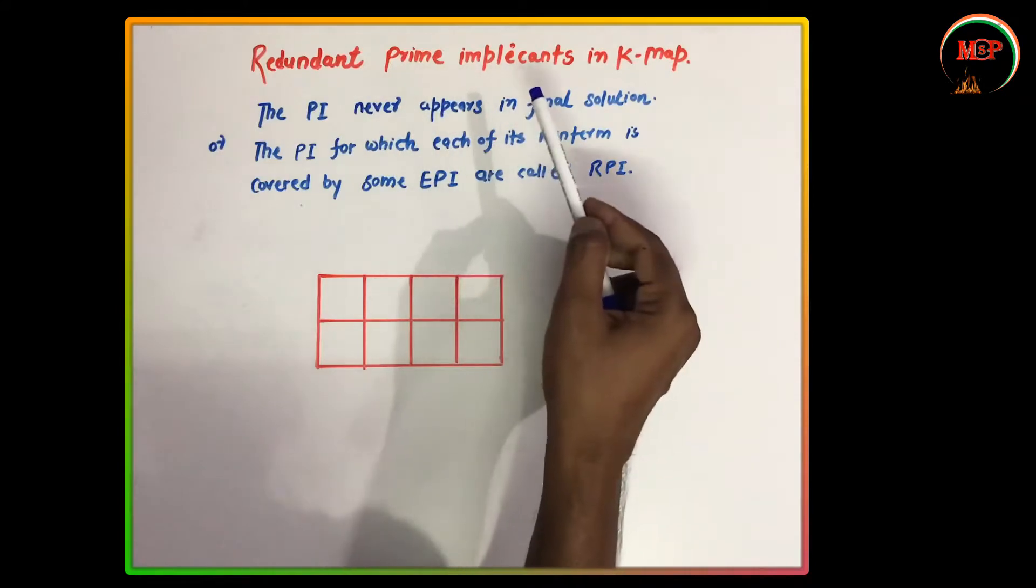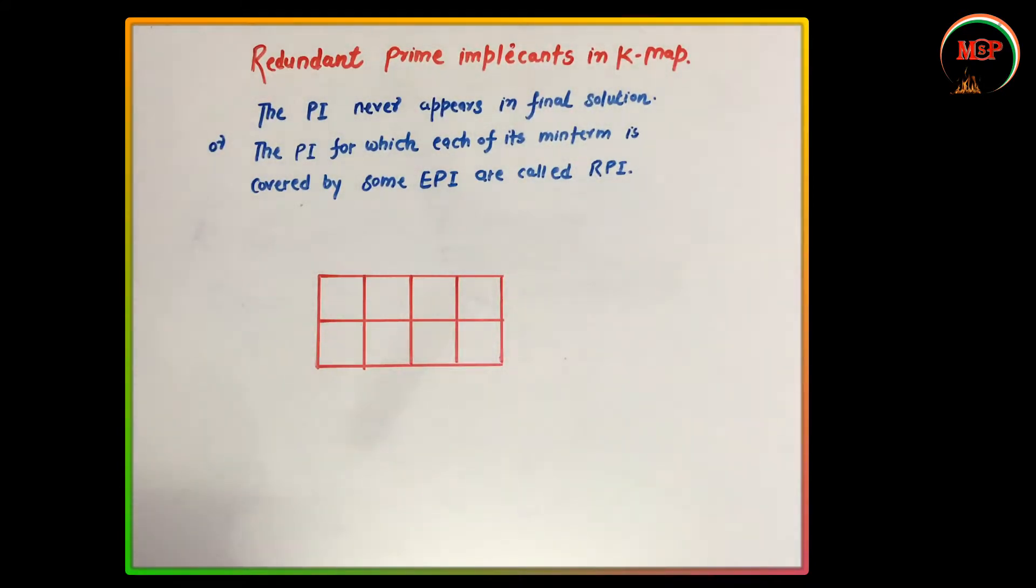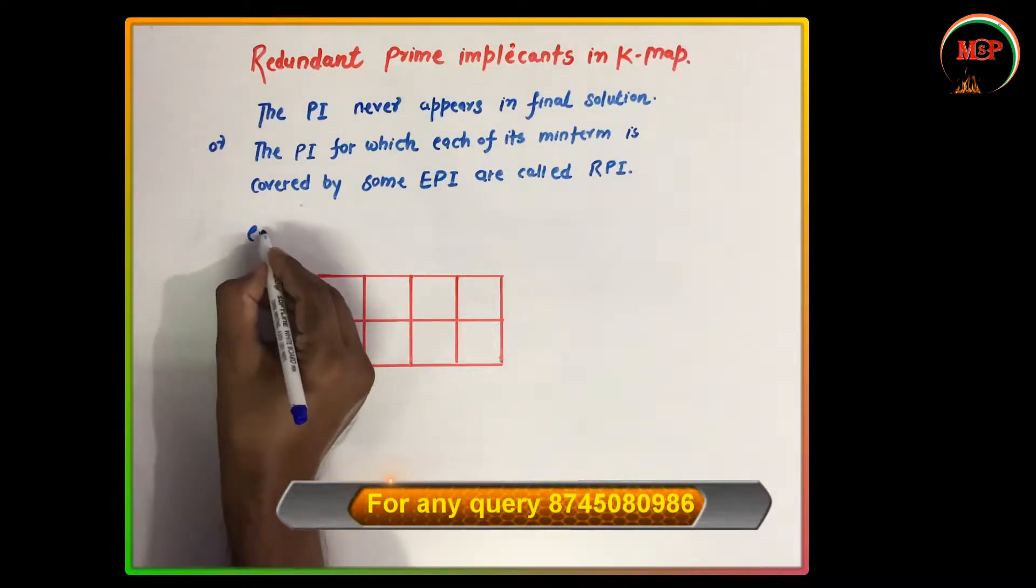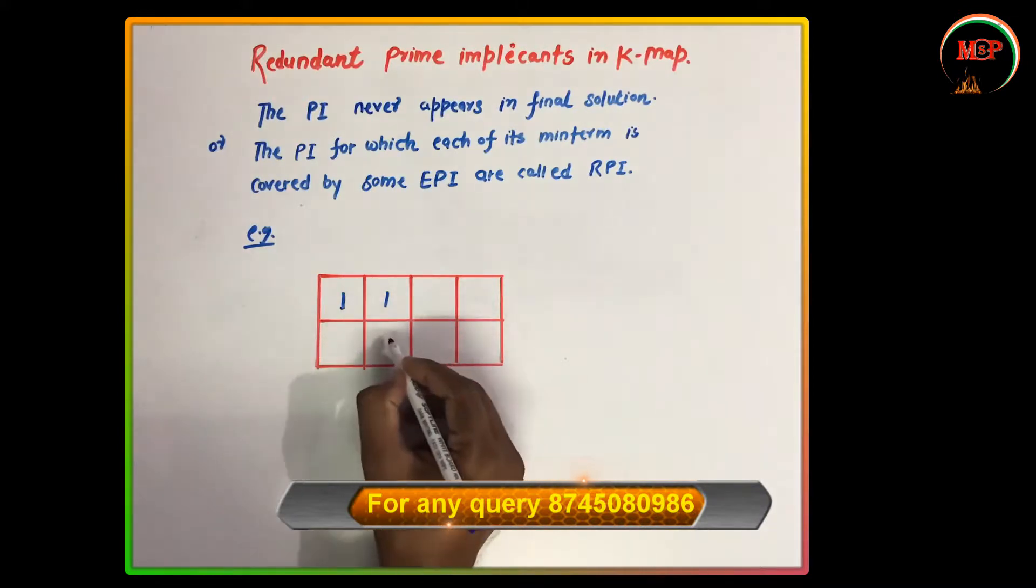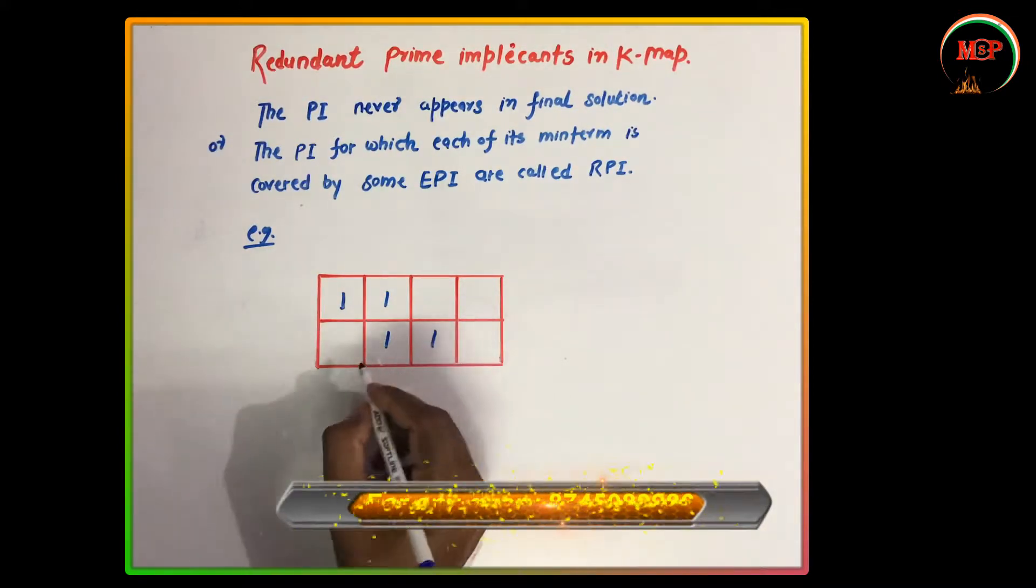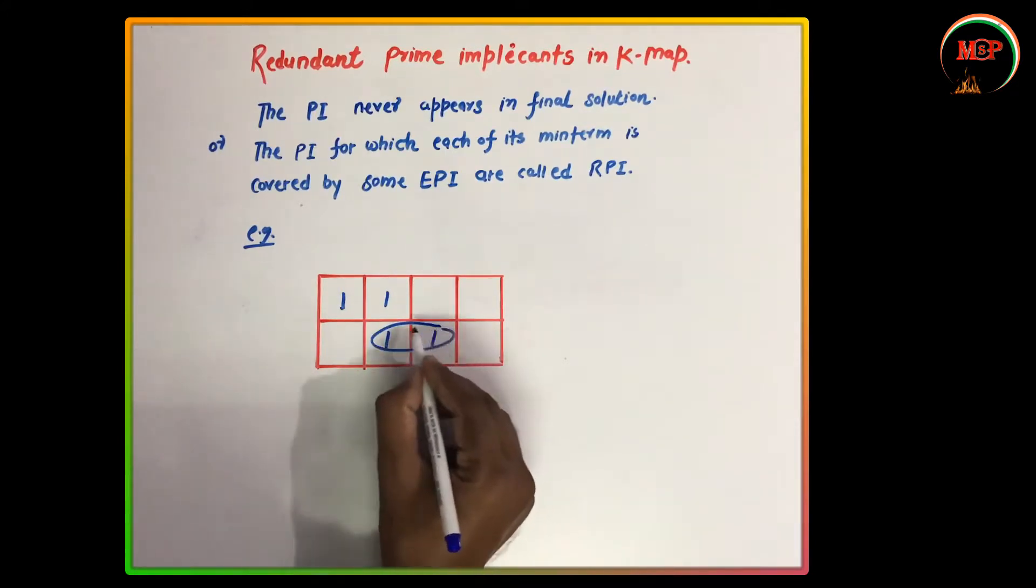Now let's see the example. Here we have example two. Here one, here one, here one, and here one. So if I make this pair, then this is the first pair and this is the second pair.